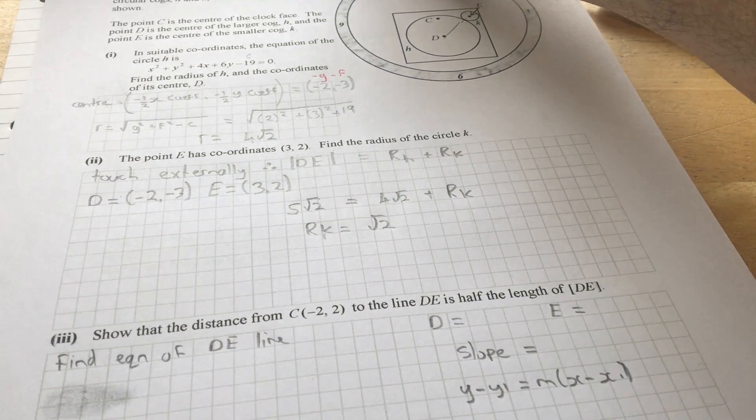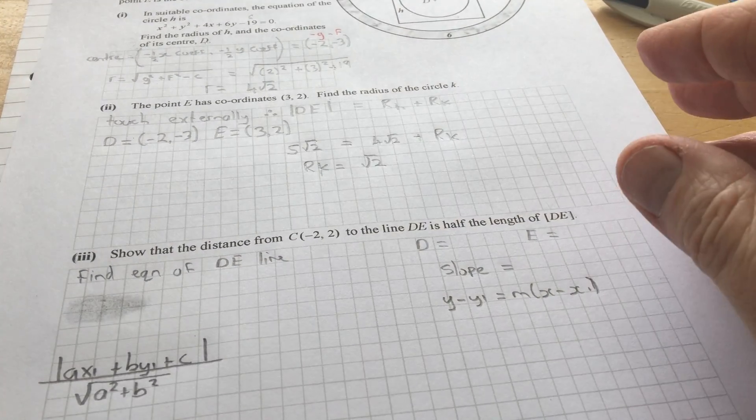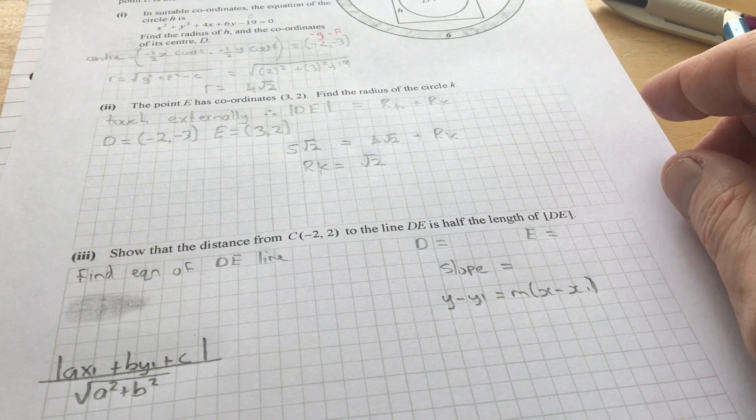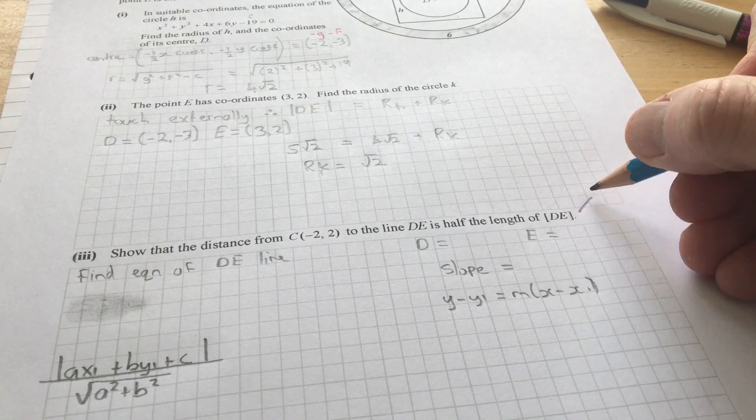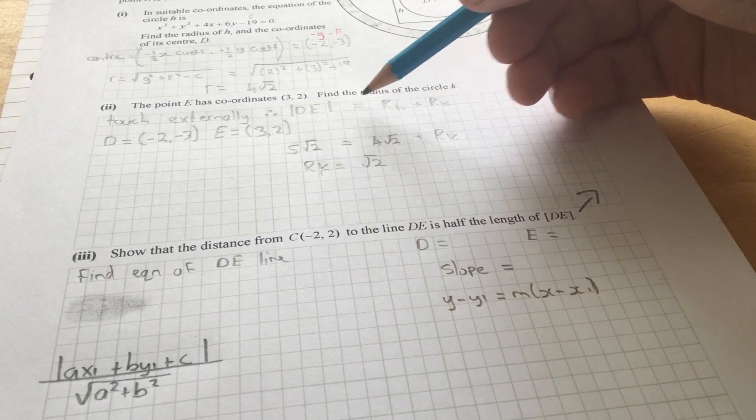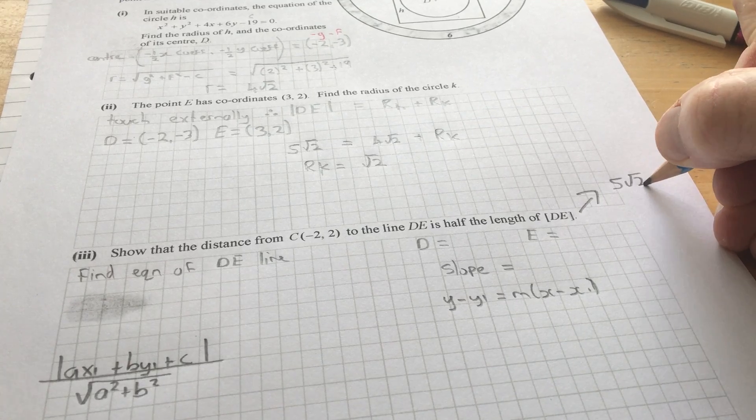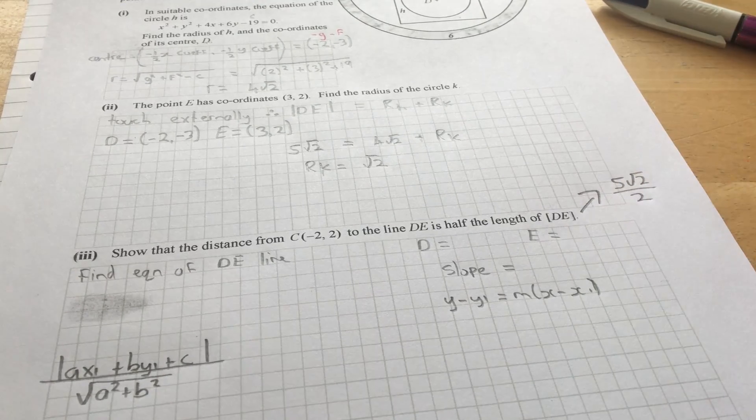Now, the next part, show that the distance from C to the line DE is half of DE. So, first of all, what's half DE? Well, DE is 5 root 2. So, therefore, half of that will be 5 root 2 divided by 2.